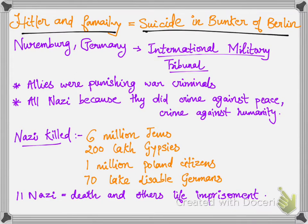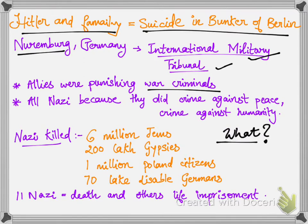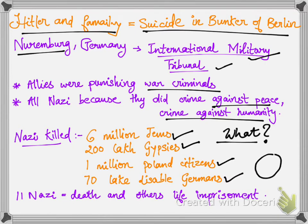An international military tribunal was called in Nuremberg, Germany to punish the war criminals — all the Nazi leaders. The Nazis were punished for crimes against peace and crimes against humanity. During World War II, the Nazis killed around 6 million Jews, 20 lakh gypsies, 1 million Polish citizens, and 70 lakh disabled Germans — a very huge number. 11 Nazis were sentenced to death and others were sentenced to life imprisonment. The punishment was very small compared to their deeds.